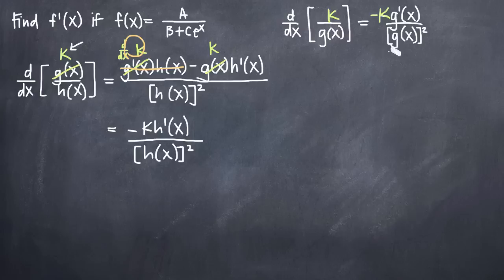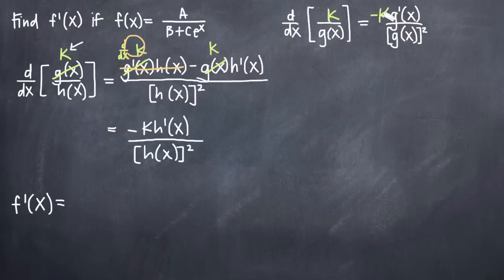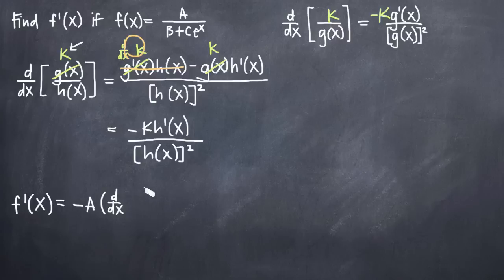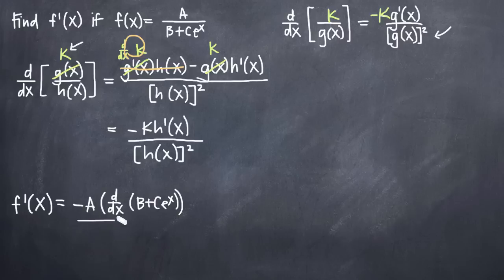Let's use our new adapted reciprocal rule formula to find the derivative of f of x. f prime of x will be equal to: negative k — where k is the constant a in our numerator — so negative a, multiplied by g prime of x, the derivative of our original denominator, which is b plus c times e to the x. Then, according to our adapted reciprocal rule formula, we divide by the square of our original denominator: b plus c e to the x, squared.